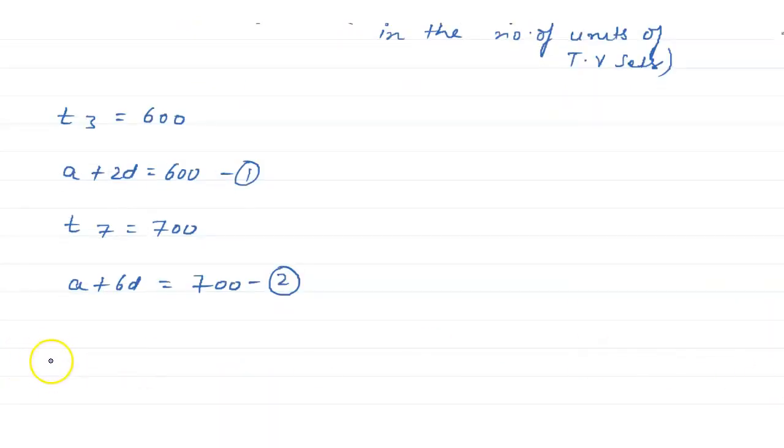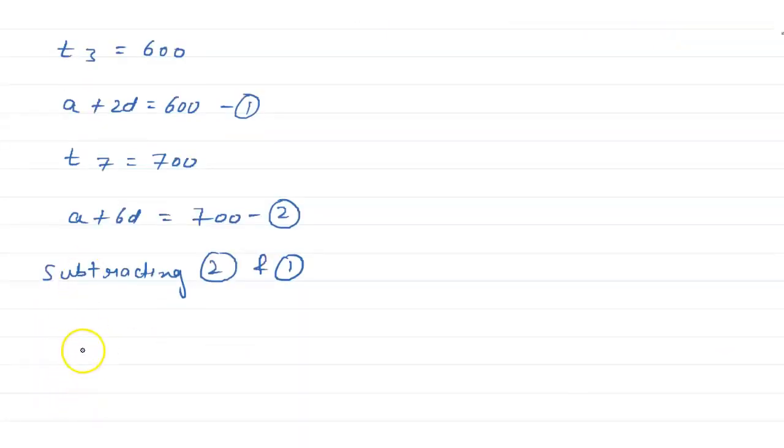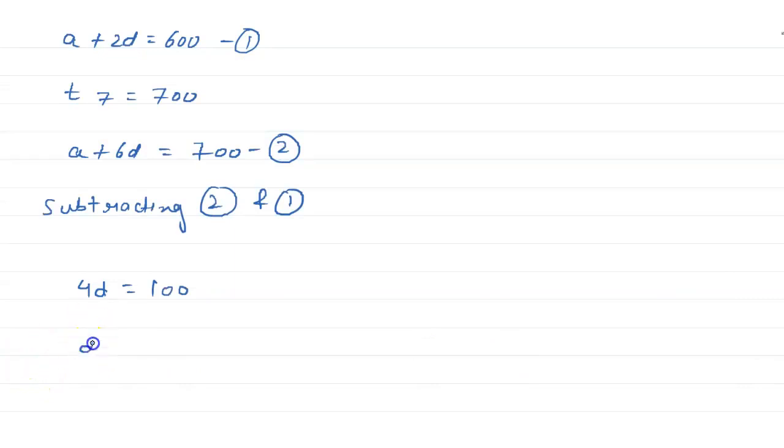Now subtracting second and first, we will get a minus a will be zero and 6d minus 2d will be 4d and 700 minus 600 will be equals to 100. So d will be equals to 100 by 4, that is 25.